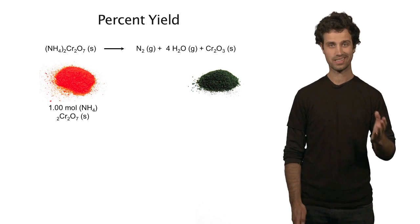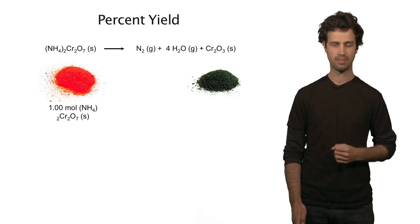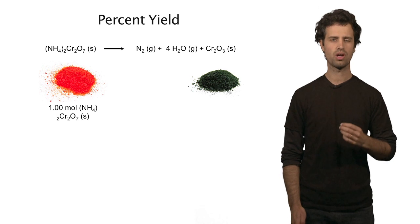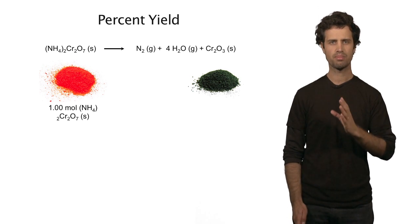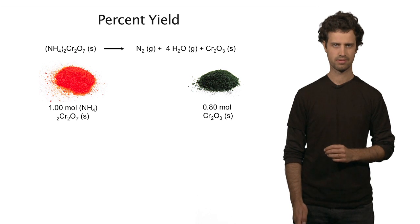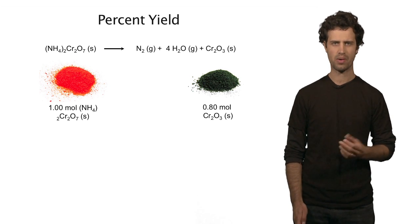Looking at the balance equation, I say the ratio is 1 to 1, that means I expect 1 mole of chromium oxide. But what if you find 0.8 moles instead? That's less than you expect. How can that be?